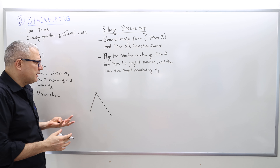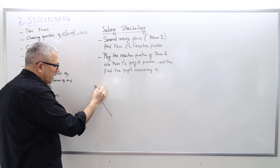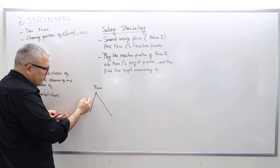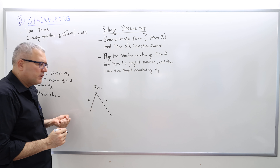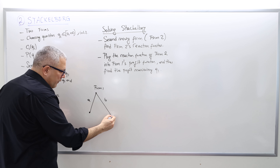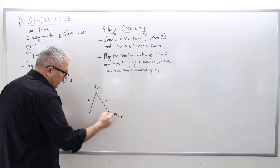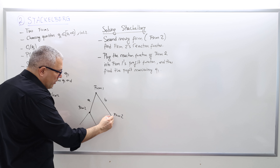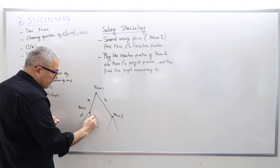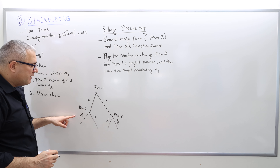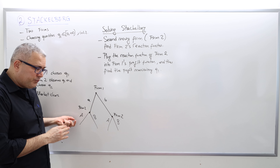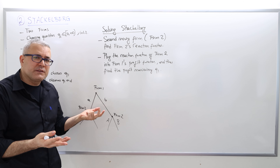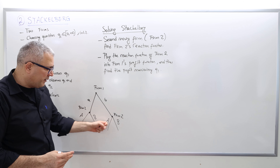Here's what the Stackelberg game looks like. There's firm one, which chooses quantities. Let's say it can choose two quantities: small a or small b. Firm two observes those actions and then also chooses one of two actions — a or b. These represent quantities, like producing five units or two units, whether the opponent produced five or two units.